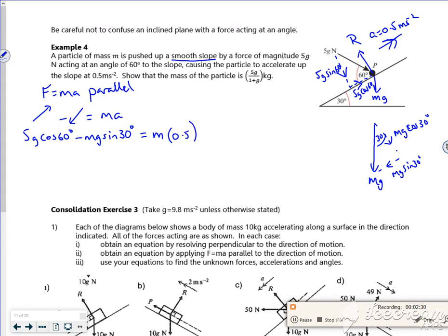That's equal to mass times an acceleration of 0.5. Now I want to get the mass to be on its own. So cos 60 is a half, so that's going to be 5g over 2.